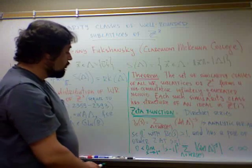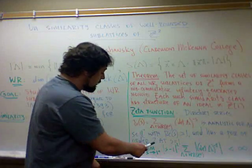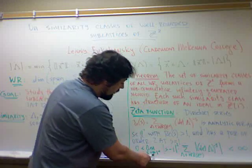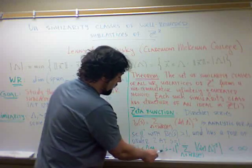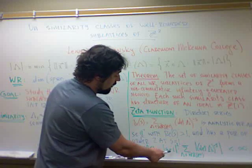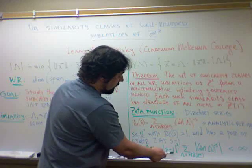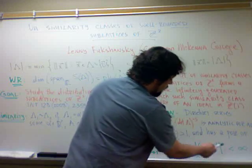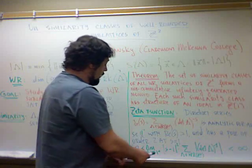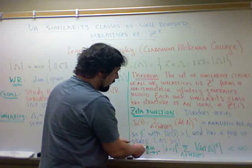it has a pole of order 2 in the sense that this limit, as S tends to 1 of absolute value of S minus 1 to the power of 2 times this series, that this limit is actually finite and greater than 0.